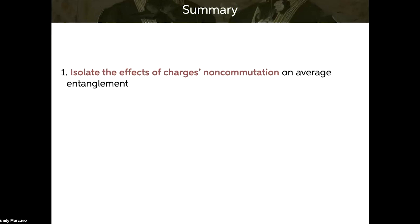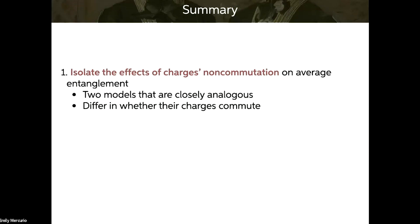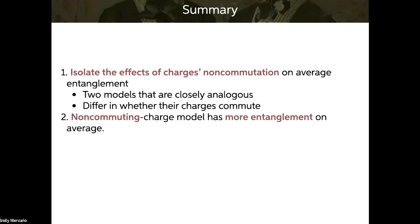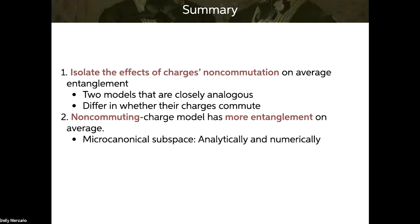To summarize: we isolated the effects of charges' non-commutation on average entanglement. To do so, we found two models that are closely analogous yet differ in whether their charges commute. We found that the non-commuting charge model has more entanglement on average. For micro-canonical subspaces, we showed this analytically and numerically. For the AMC subspaces, we showed it numerically.